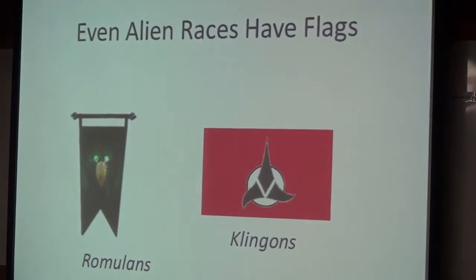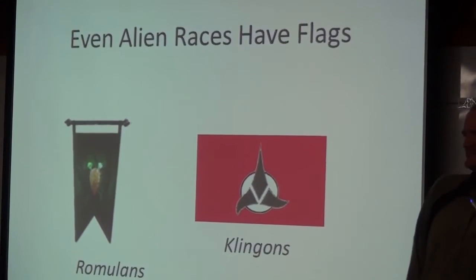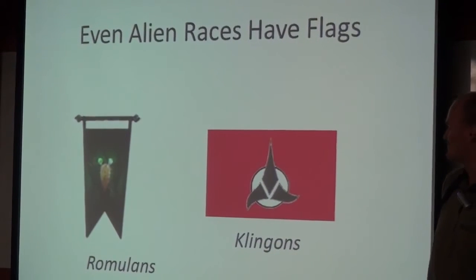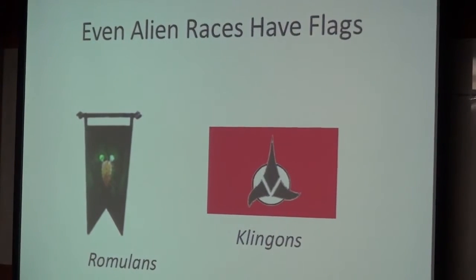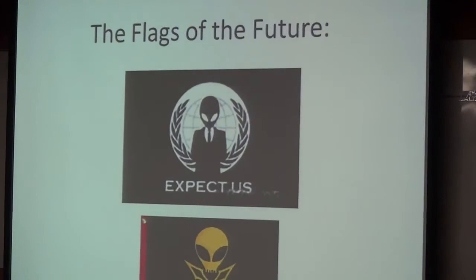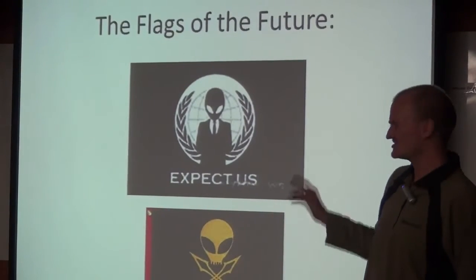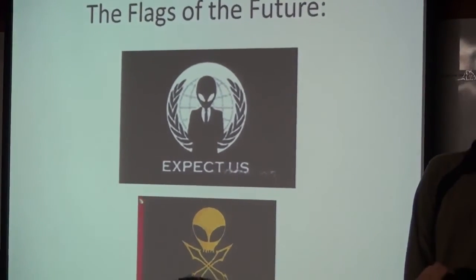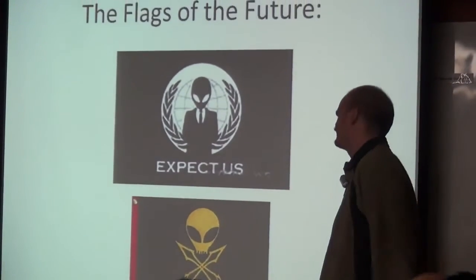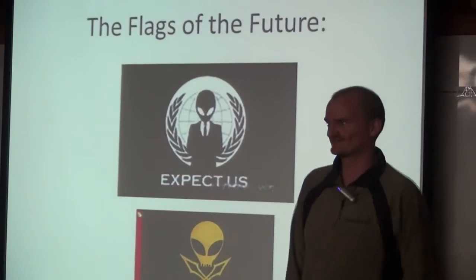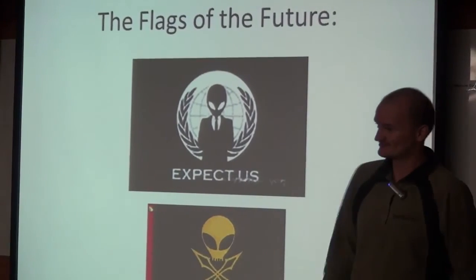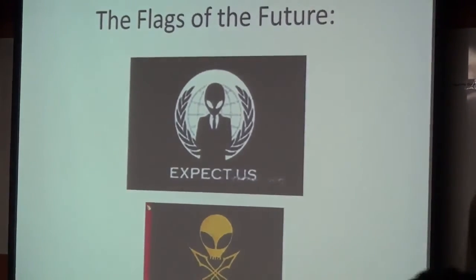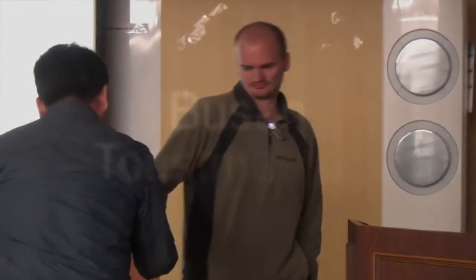What about the future? Even alien races on TV have their own flags — the Klingons and the Romulans have a flag. How did they get this idea? In about 30 years, we should expect to make contact with aliens, and chances are they will have a flag. Is this what we want? Luckily for us, they speak English. Thank you, fellow Toastmasters.